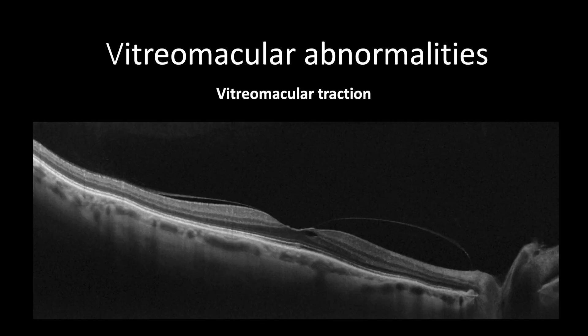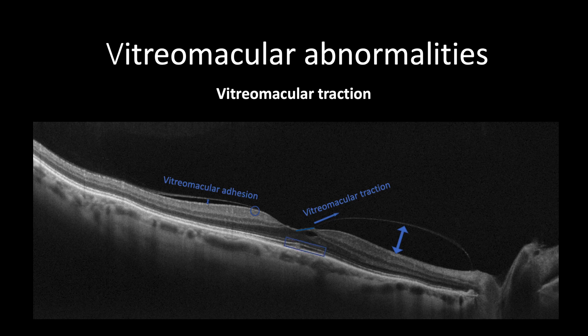As in vitreomacular adhesion, vitreomacular traction shows separation of the vitreous perifoveally, but with vitreomacular traction at the center of the fovea in the form of a plate, showing anterior-posterior and oblique posterior cortical vitreous traction with disruption of the ellipsoid zone, interdigitation zone, and inner retinal tissues.